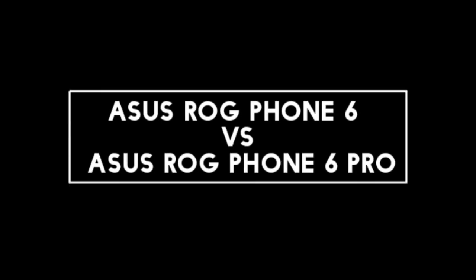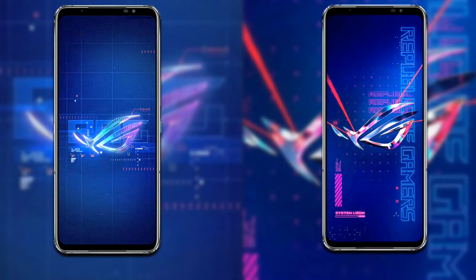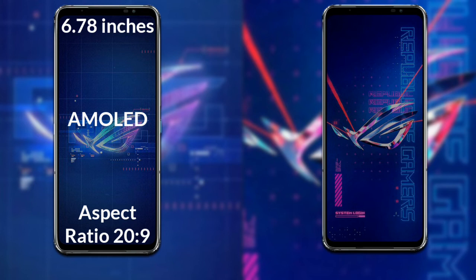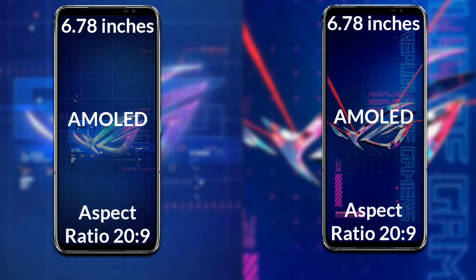I will compare the new Asus ROG Phone 6 with the Asus ROG Phone 6 Pro. Let's talk about the display. Both phones — the ROG Phone 6 and the ROG Phone 6 Pro — have a 6.78-inch Full HD AMOLED display with a 20:9 aspect ratio.